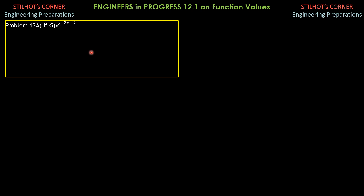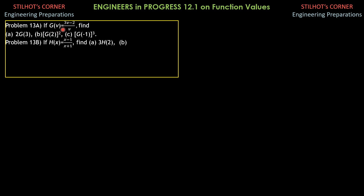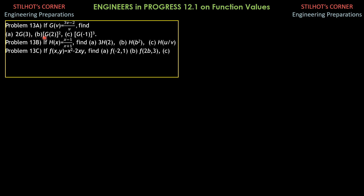There are some exercises here. If g as a function of v is (3v minus 2) all over v, find: 2 times g of 3, then the quantity g of 2 squared, then g of negative 1, quantity cubed.